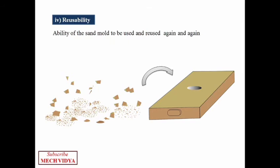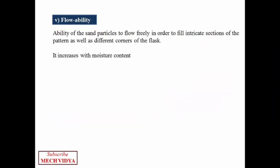After this comes one more important property, that is flowability. Flowability is a property which ensures that the molding sand flows freely to fill in intricate portions of the pattern and also at different corners of the flask. Flowability is a function of moisture content of the sand.